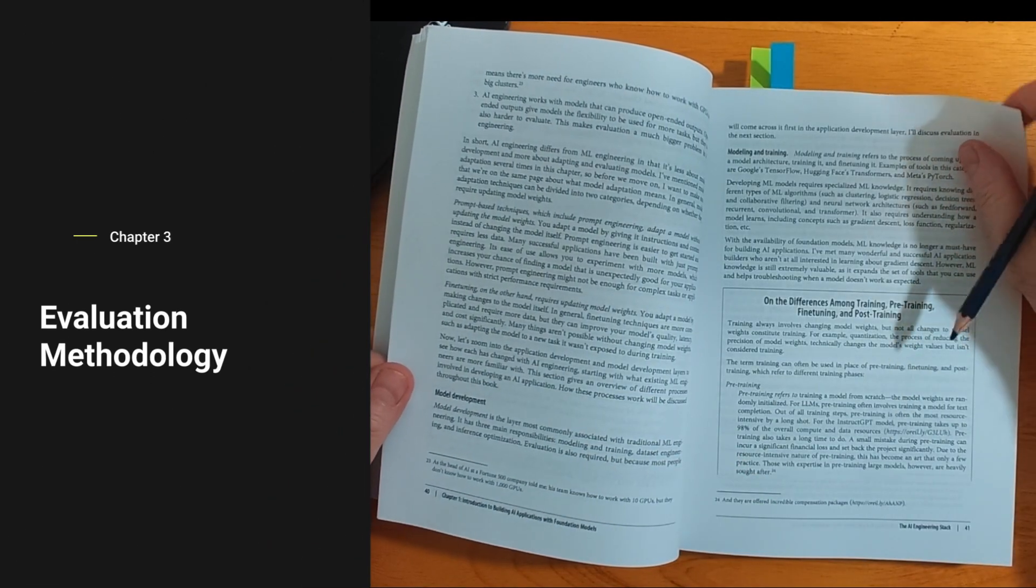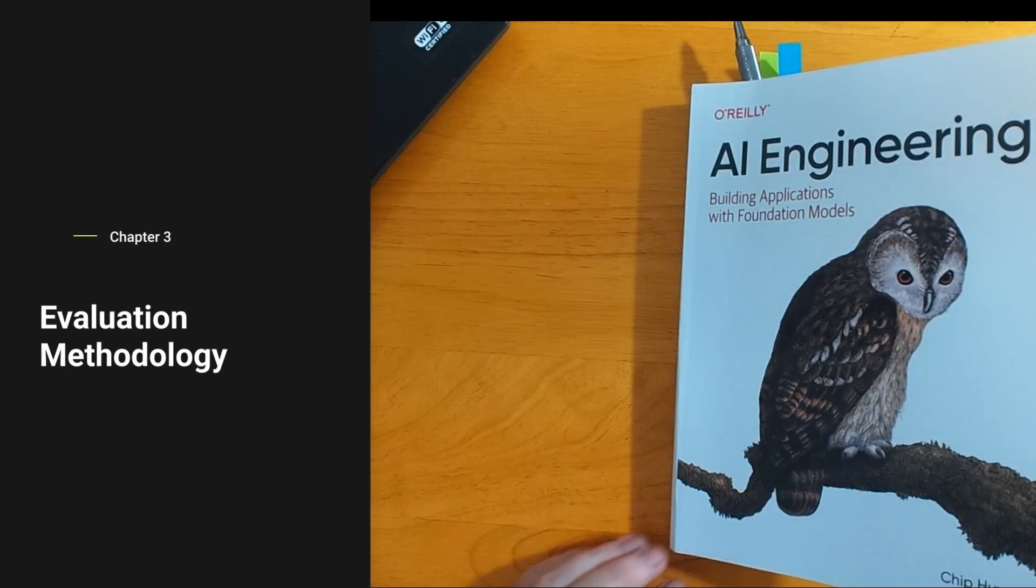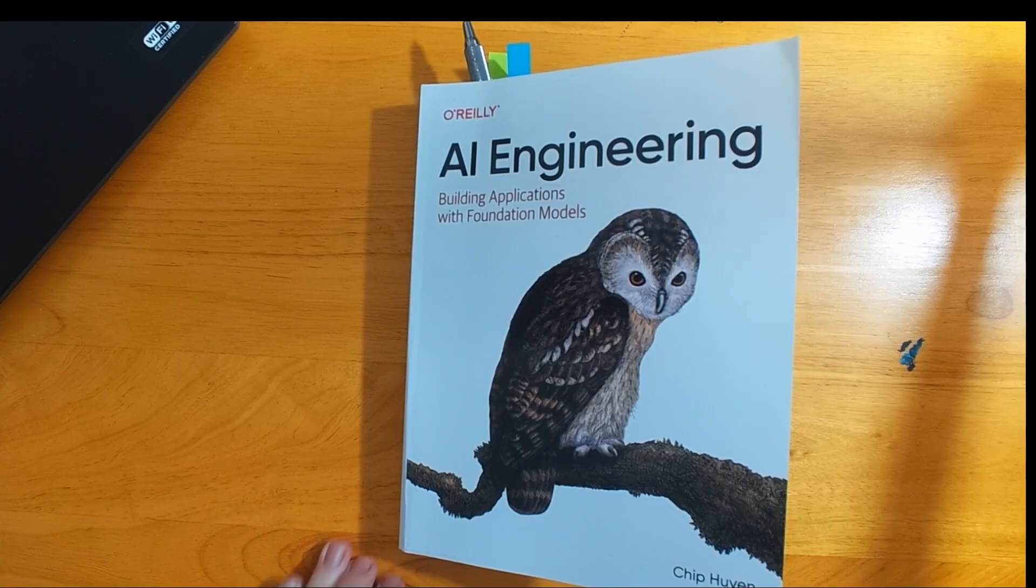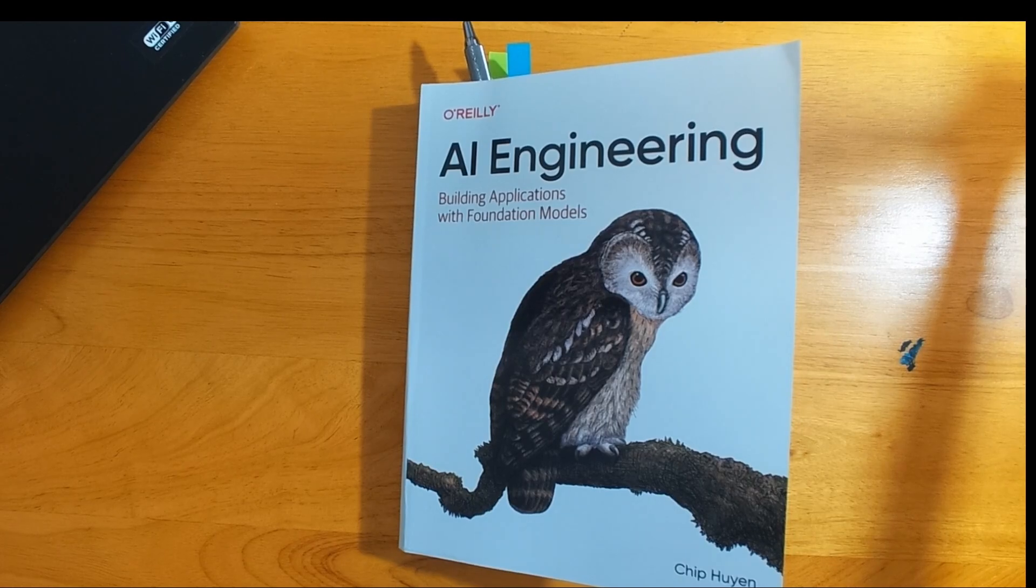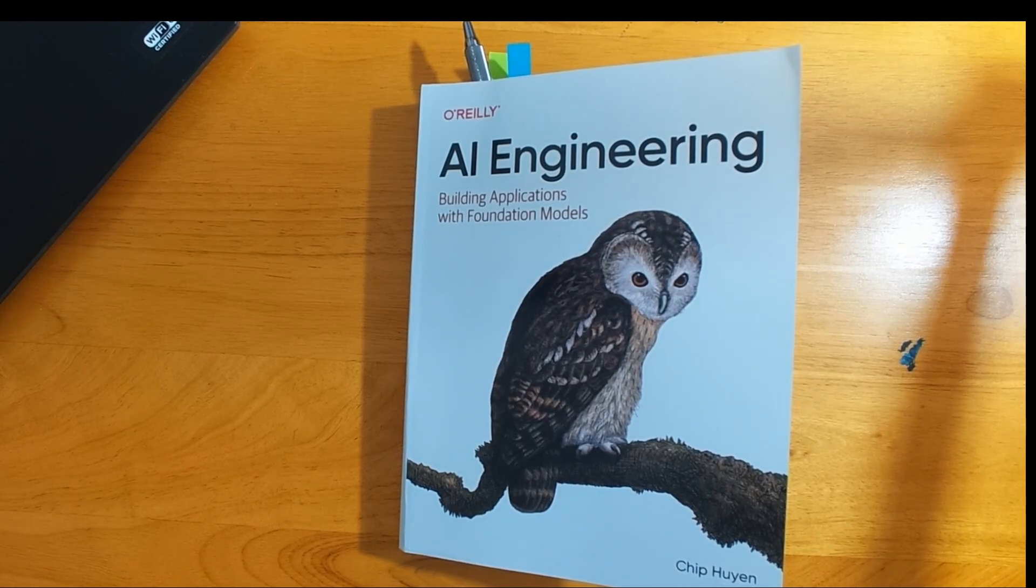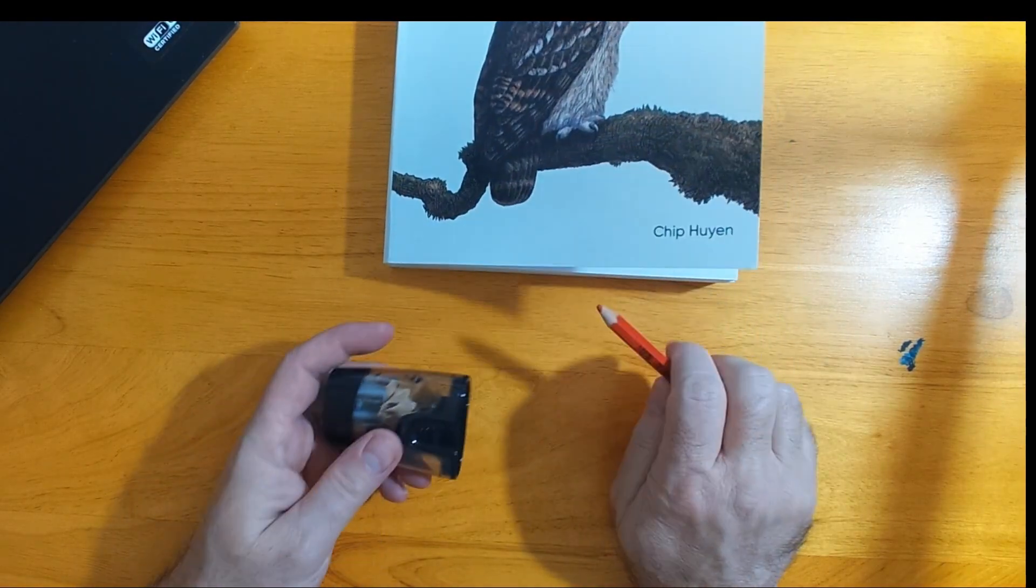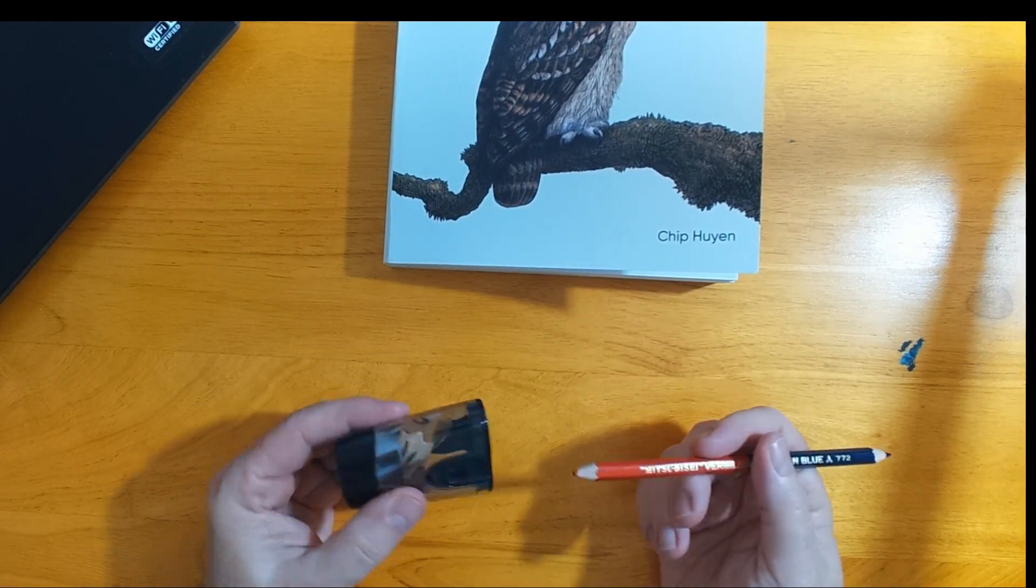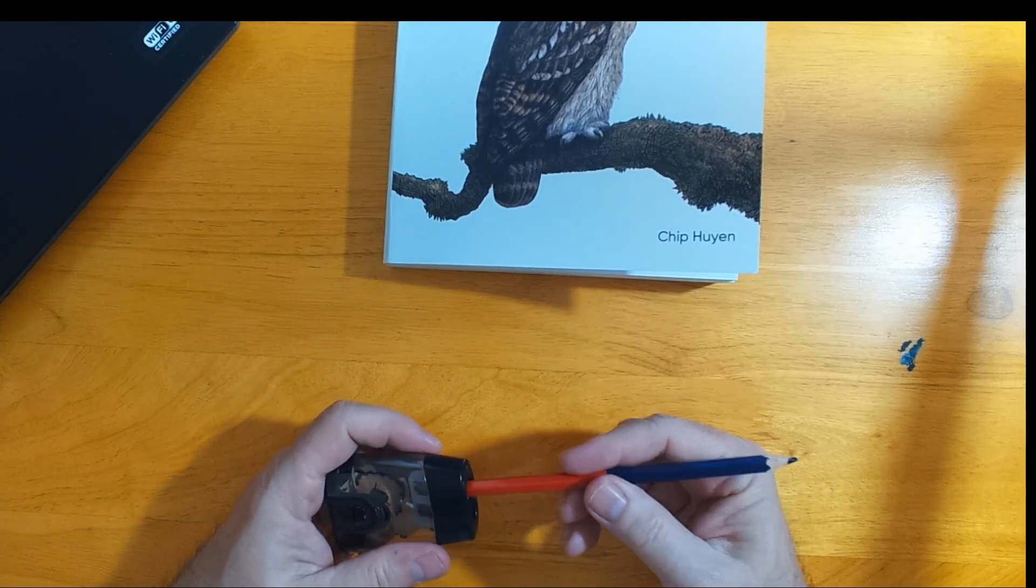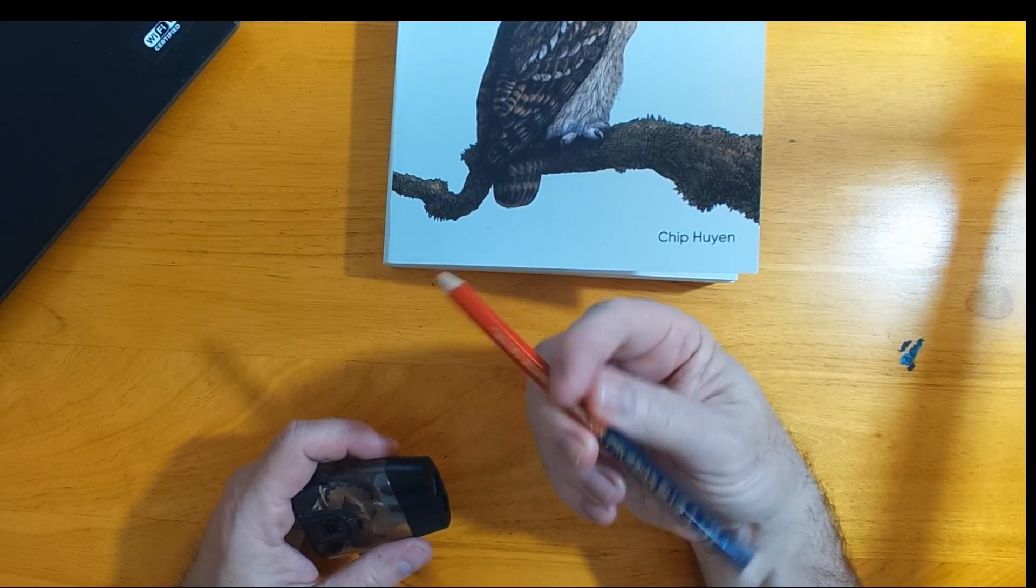Chapter three introduces an important topic, evaluation methodology. Evaluation comes down to choosing the model that is best for your application. Many people start by thinking that they'll go with whatever is the most popular model from OpenAI, like GPT-4. But selecting the right model is a complex task.